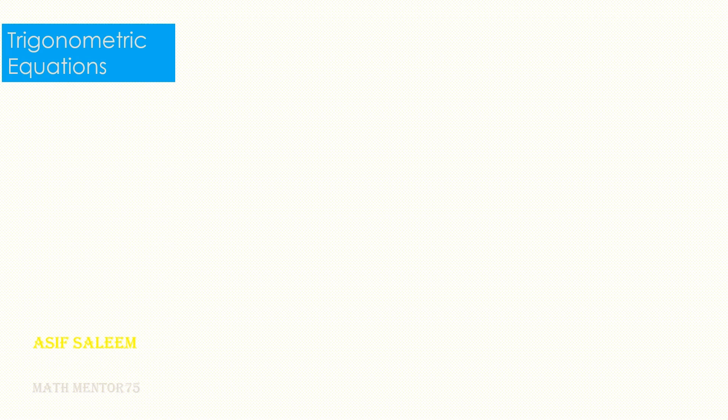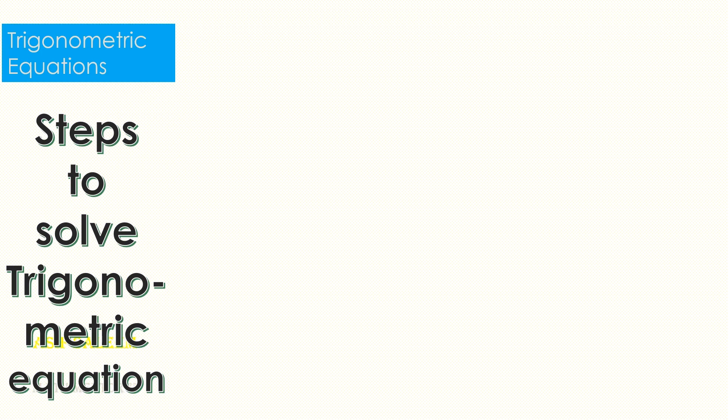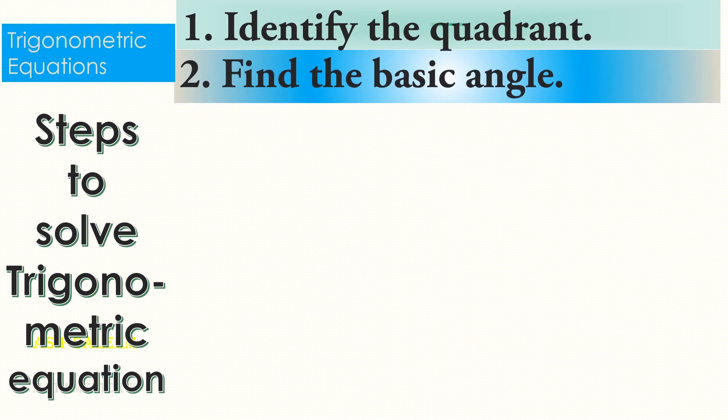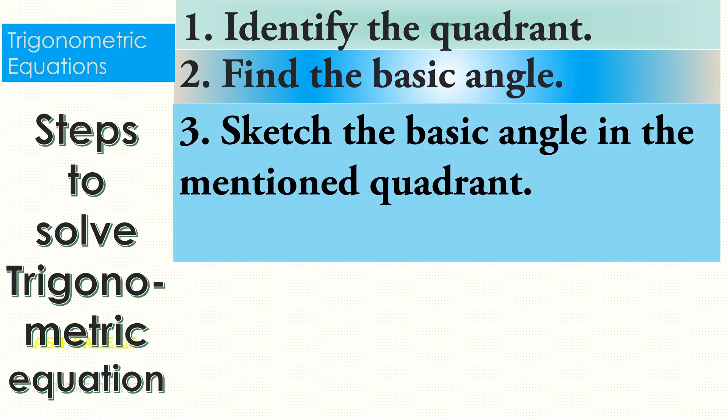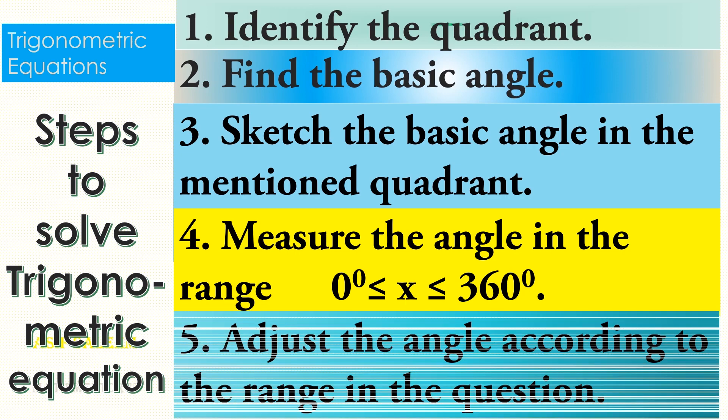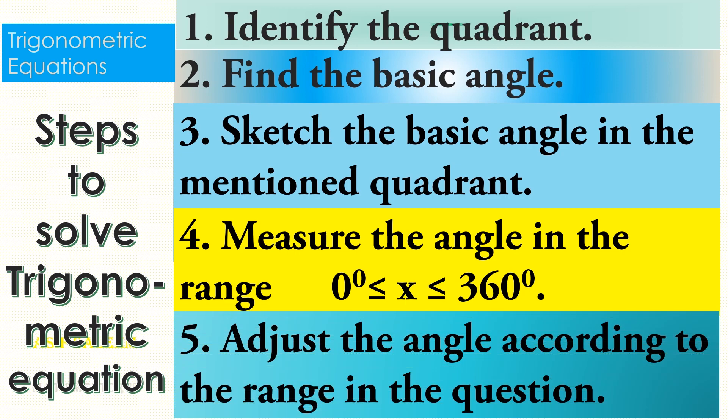In trigonometric equations, we have to follow certain specific steps. Step one: identify the quadrant. Step two: find the basic angle. Step three: sketch that basic angle in the mentioned quadrant. Step four: measure the angle within the range from zero to 360 degrees. Step five: adjust the angle according to the range of the question. These are the five steps to solve any trigonometric equation.